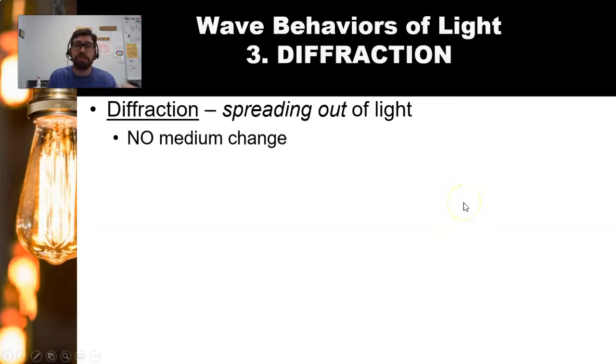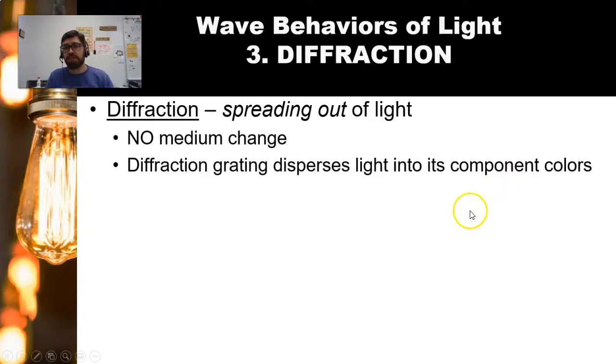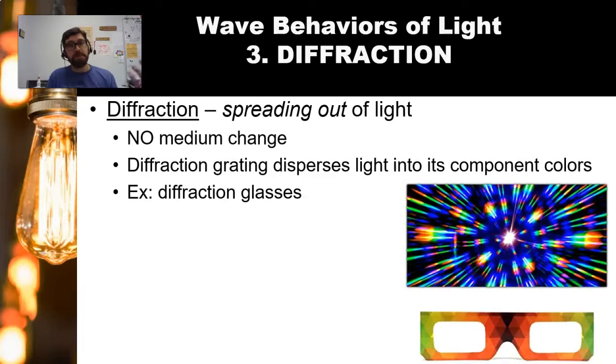Here, we're not talking about a medium change. We're talking about light. In this case, I'm going to talk about light going through a very narrow slit. And when it gets through that slit, it spreads out on the other side. And we're going to talk about a diffraction grating, which disperses light into its component colors. And we've said this before. The way that you normally see diffraction, and often refraction as well, is a rainbow. When you see a rainbow, you need to know that what's happening is that white light is bending.